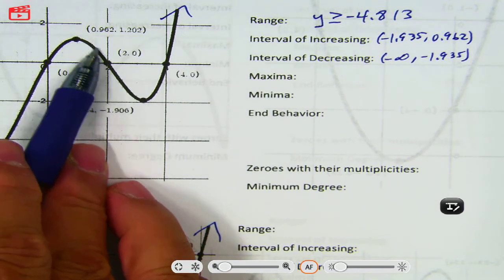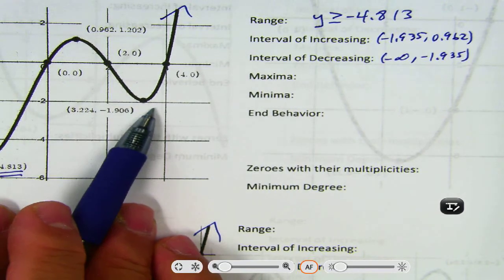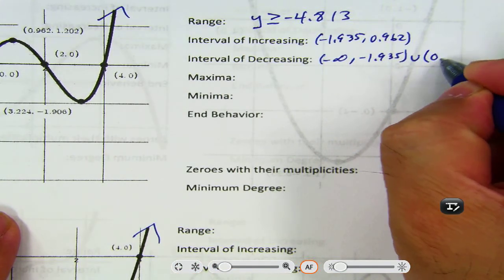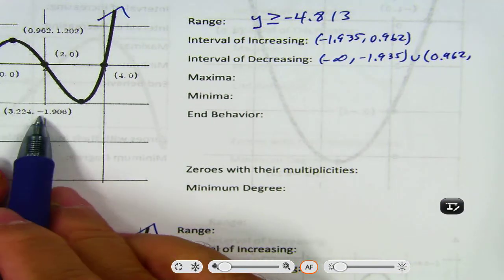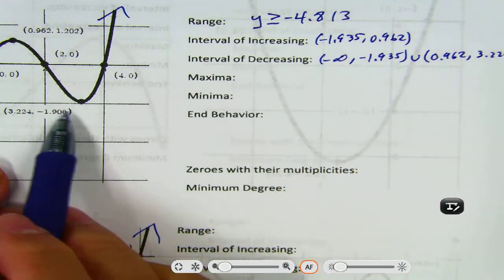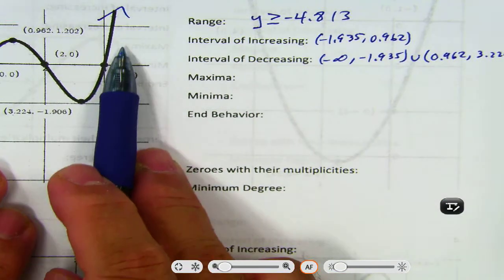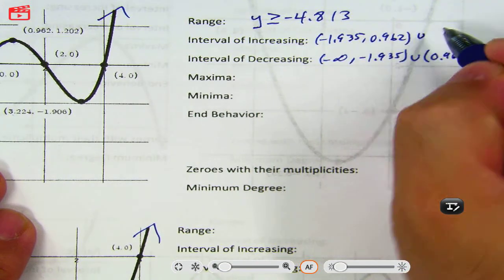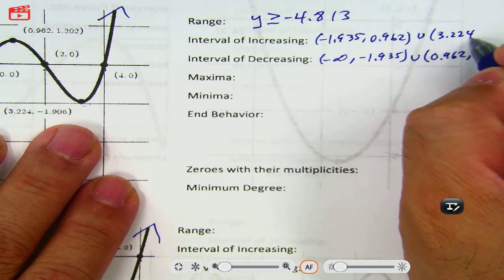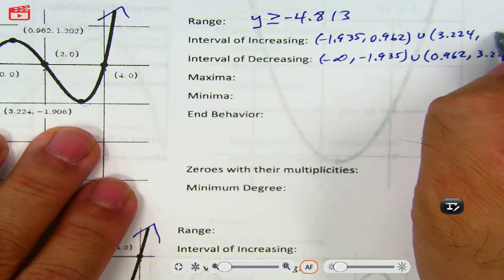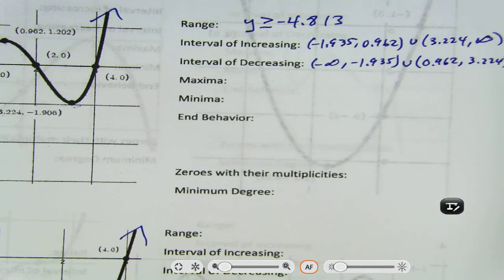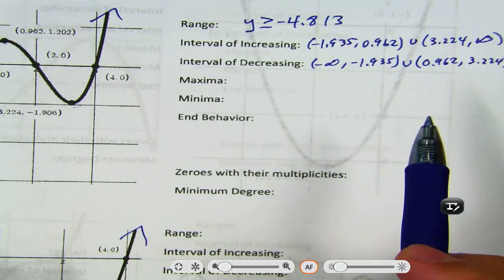Now it's decreasing. So I'm starting at 0.962, put a little union symbol, then 0.962 down to 3.224. And then it's increasing after that — union, going to be 3.224, and it doesn't stop going up, so it's infinity. That's interval notation.